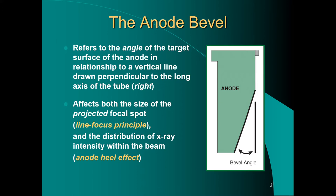The anode bevel affects some things. This affects both the size of the projected focal spot and the distribution of x-ray intensity within the beam. This is obviously not something that you can change in any x-ray room. Different machines have different anode bevel angles depending on their use.